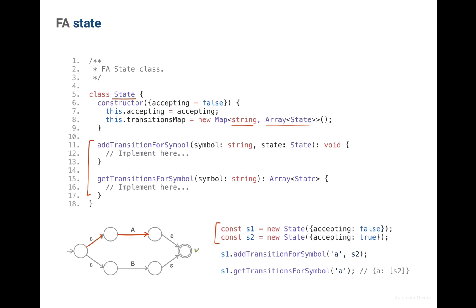Here we create two states S1 and S2, and then add a transition from state 1 to state 2 on the character A. And when we get the transitions on the character A, the method should return an array containing only one state S2.